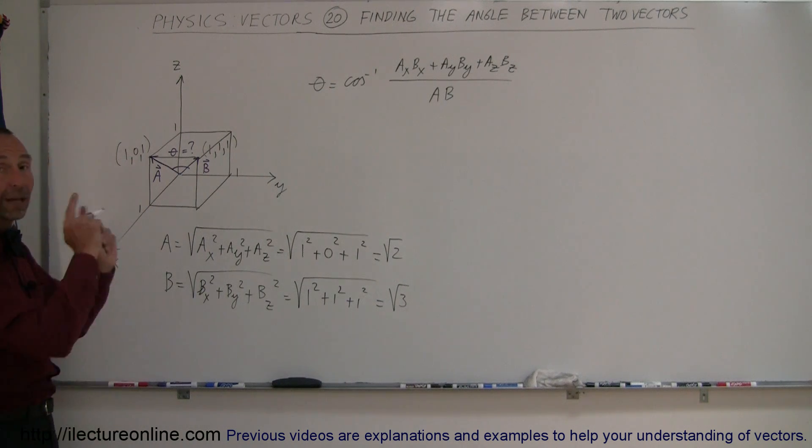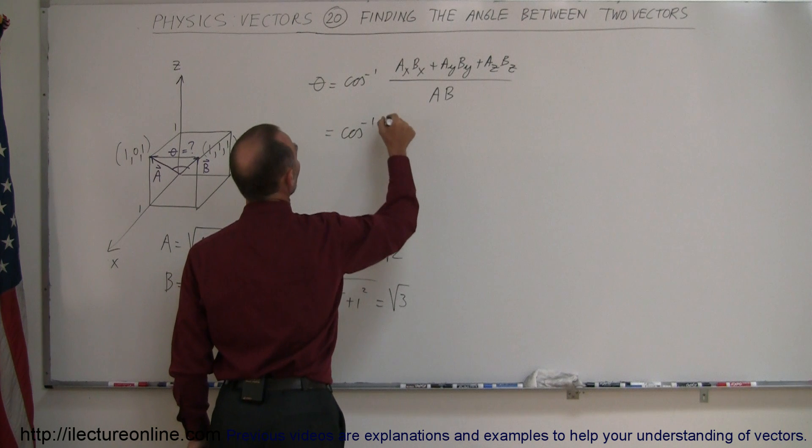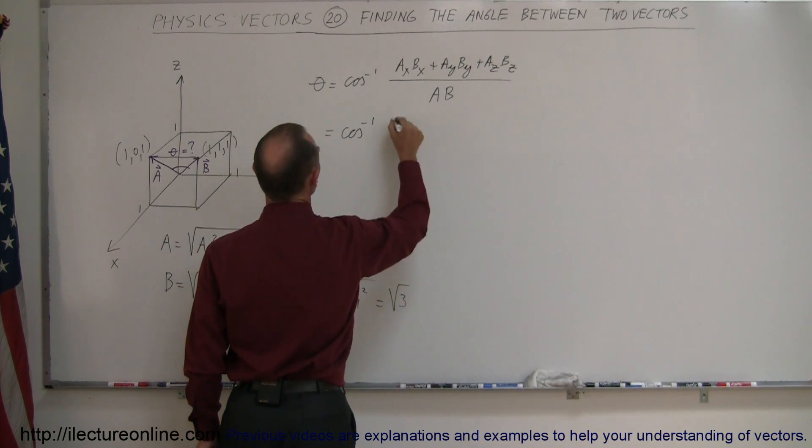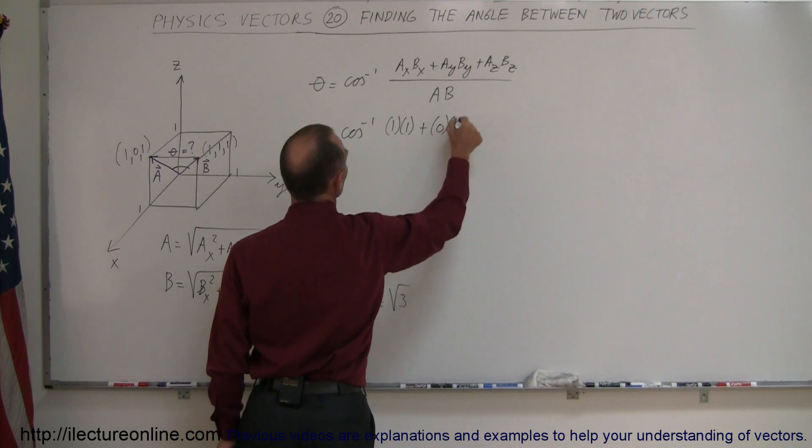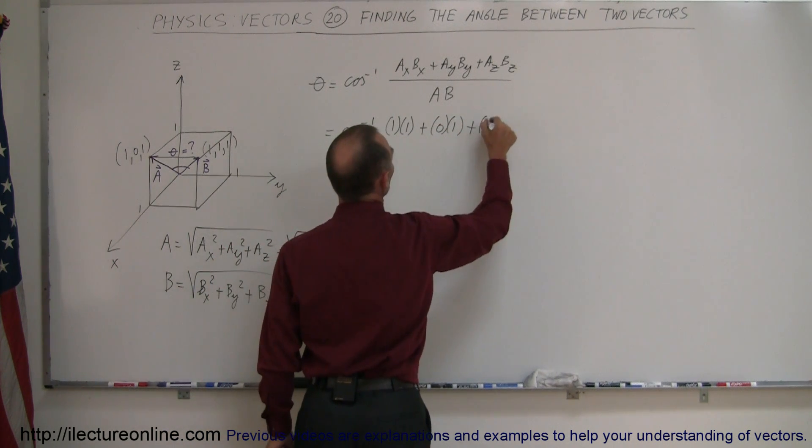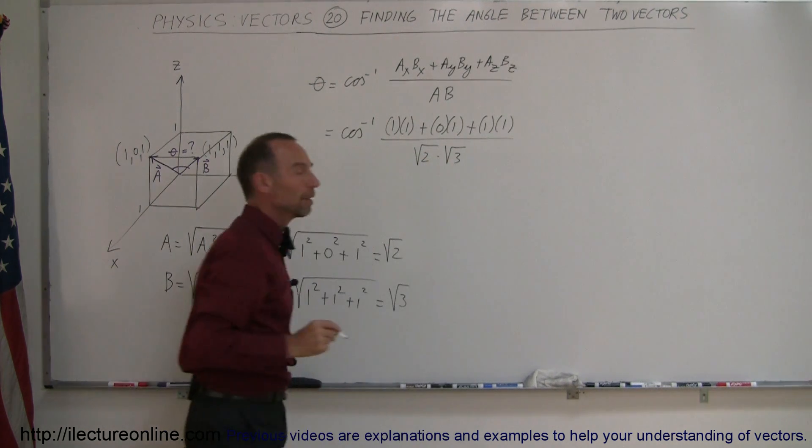Now let's plug that all in. This is equal to the arc cosine of A_x which is 1, times B_x which is 1, plus A_y which is 0, times B_y which is 1, plus A_z which is 1, times B_z which is 1, all divided by the square root of 2 times the square root of 3.